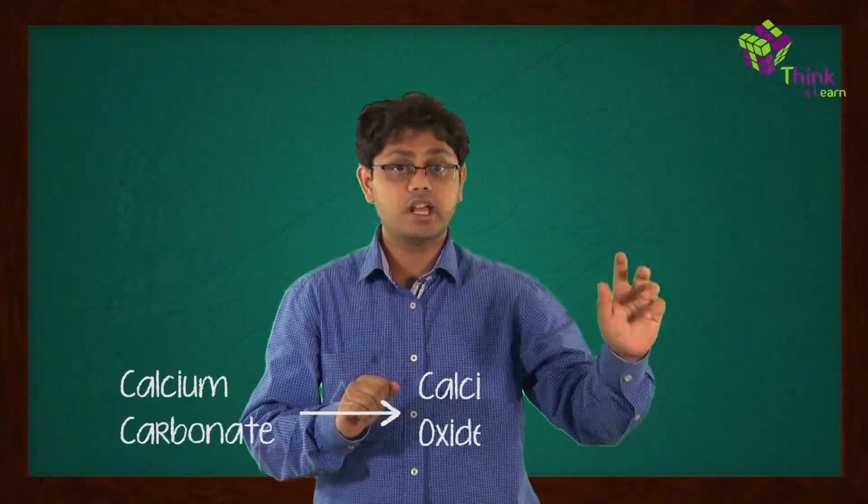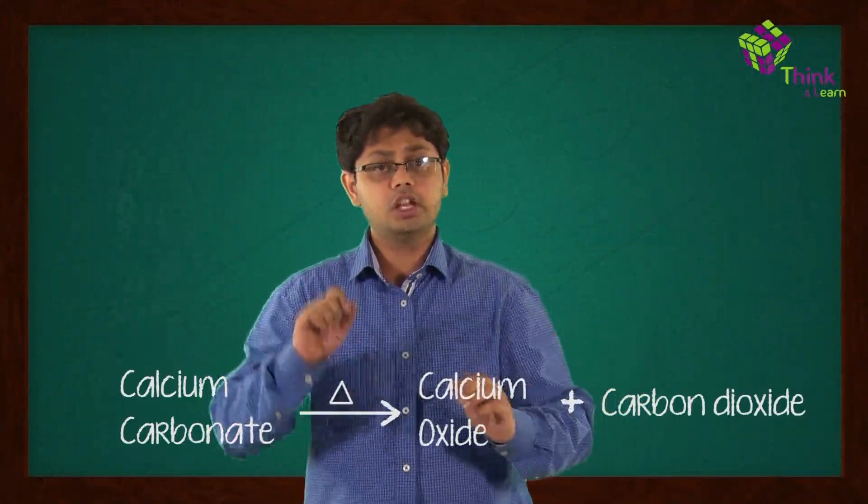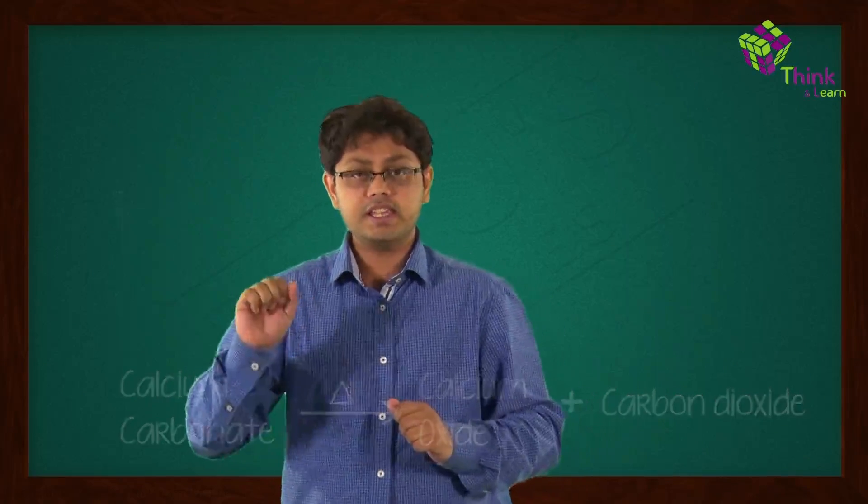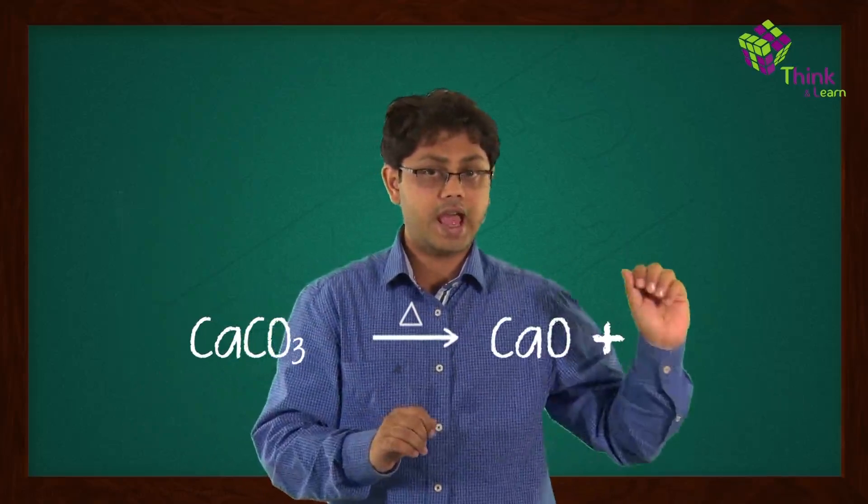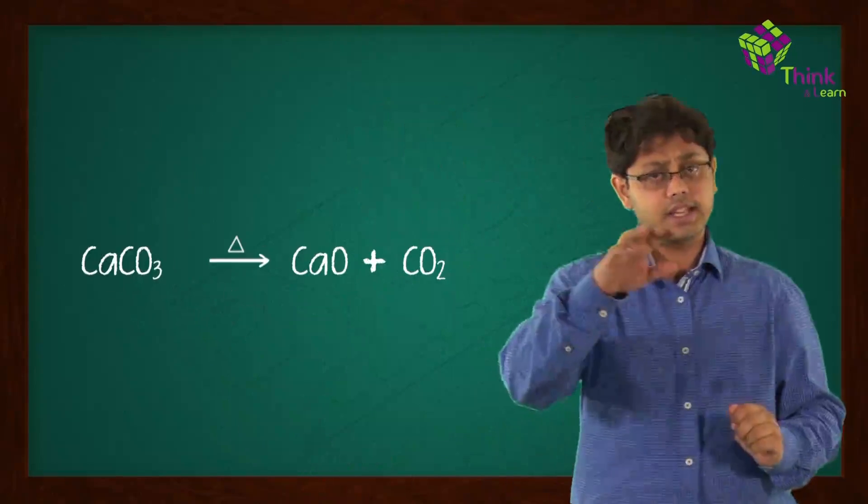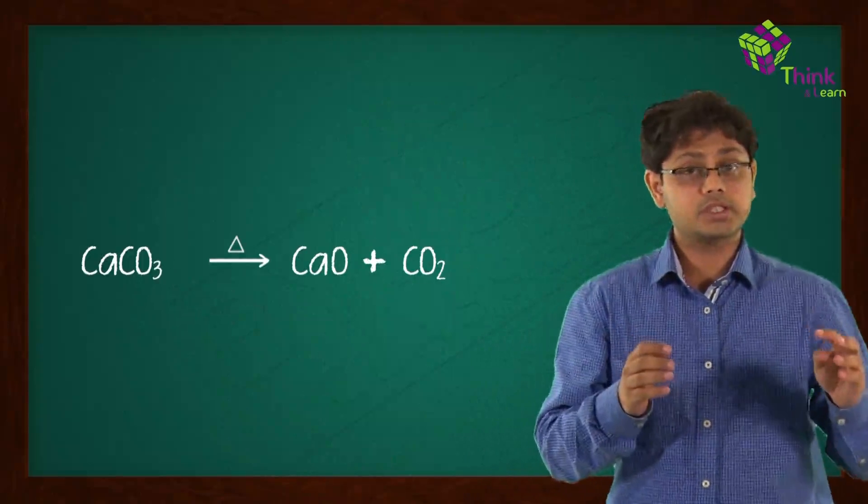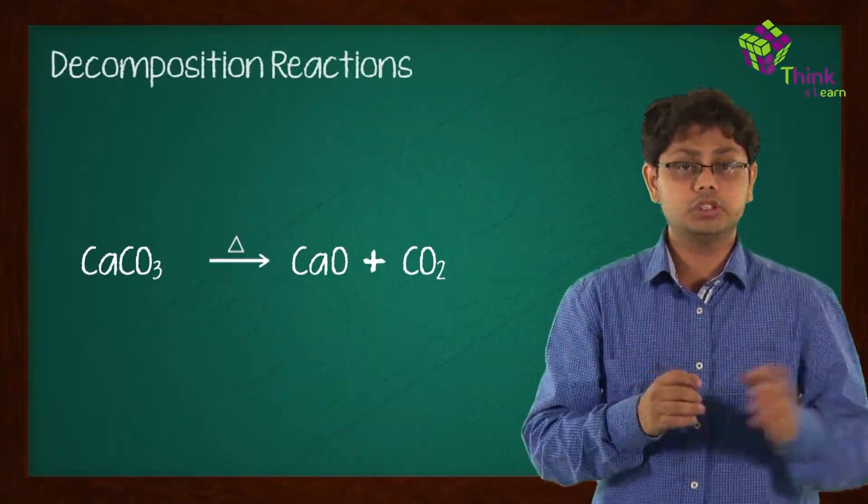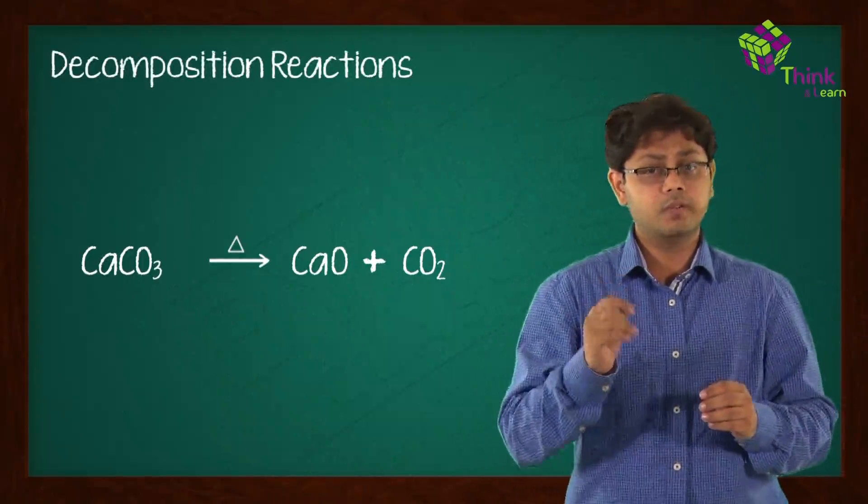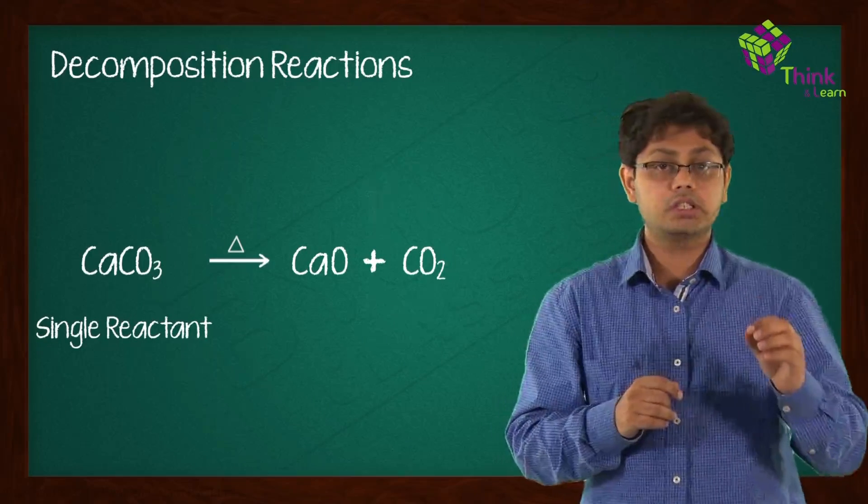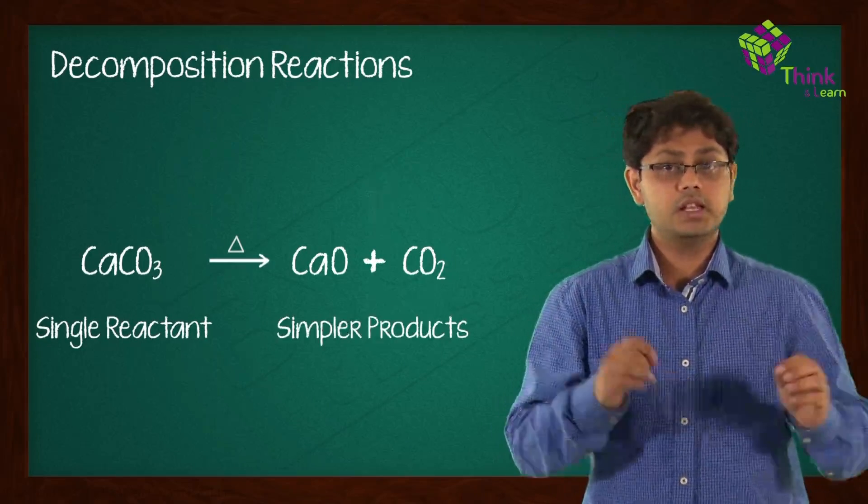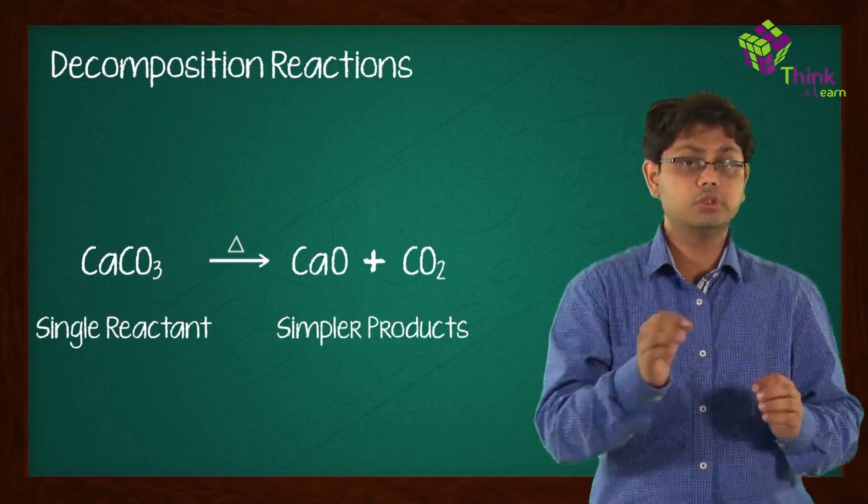So what was important in this chemical reaction was calcium carbonate breaking down into calcium oxide and carbon dioxide. To represent this chemical equation, CaCO3 is going to give you CaO and CO2. This kind of reaction has a special name, and the name is very obvious. It is known as decomposition. In this reaction, you can observe that a single reactant breaks down to give you simpler products. This is a decomposition reaction.